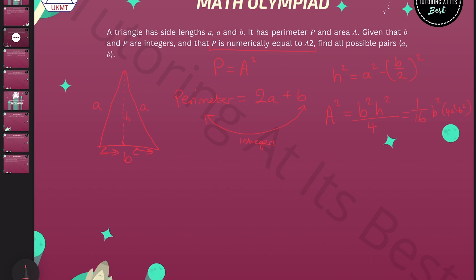Now we have the area squared, and we can equate it to the perimeter. We have 2A plus B, which equals 1 over 16, which is B², 4A² minus B². We'll divide this entire by 16. You can see we have 16, 2A plus B, and that leaves us with B², 4A² minus B².